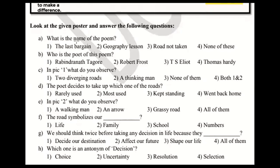Part A: What is the name of the poem? The poem's name is 'The Road Not Taken.' Now there is an option — option three says 'Road Not Taken.' The 'The' is missing from the option, but for now we can ignore that and choose 'Road Not Taken.' But if your ma'am says 'The' is important, then the answer will be option four.